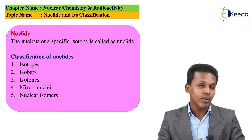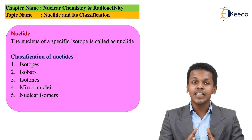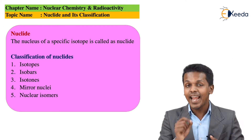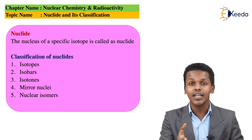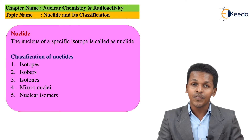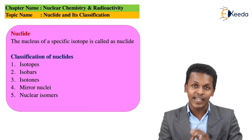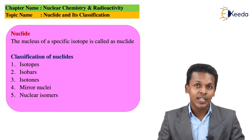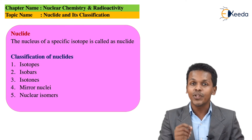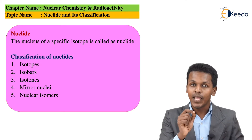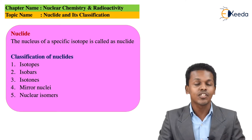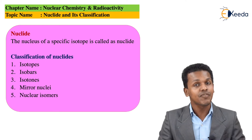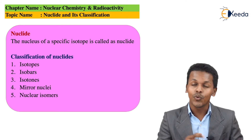But what is a nuclide? A particular element consists of different isotopes, and the nucleons — that is the sum of the protons and the neutrons present in the nucleus — is basically what defines a nuclide. If we are talking about a particular nucleus of a particular isotope, that is known as a nuclide. Based on that, let us understand the different classifications of nuclides.